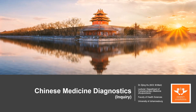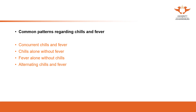Hello everyone. In this video we are going to talk about some common patterns of coldness and heat — the common cold and hot patterns. There are four common patterns regarding chills and fever: concurrent chills and fever, chills alone without fever, fever alone without chills, and alternating chills and fever.